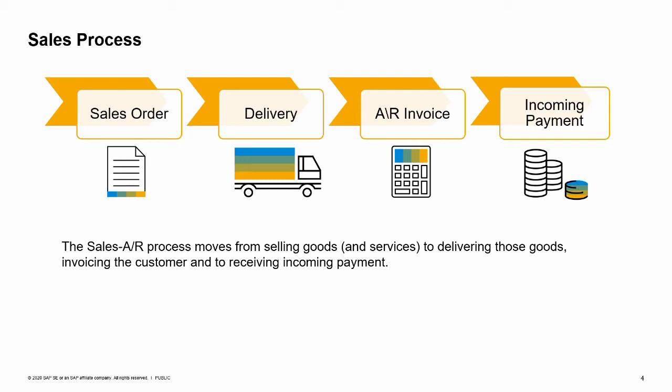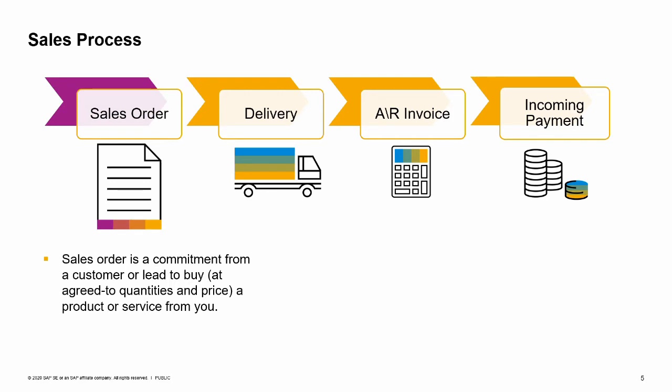Sales documents carry much of the same information throughout the sales process. This topic helps you recognize what is the same in each document so that you can quickly focus on just the information you need. Note that you also have the option to use a sales quotation to start the sales process, though the sales quotation is not covered in this e-learning. The sales order is a commitment from a customer or lead to buy agreed-to quantities and price of a product or service from you.